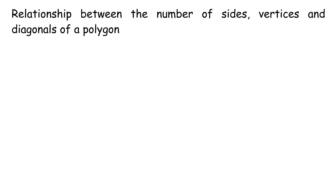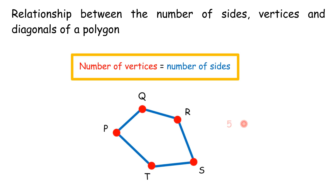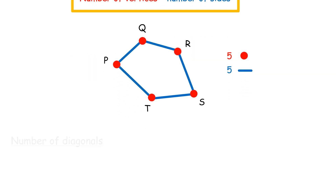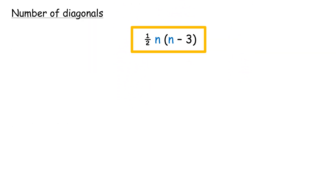Relationship between the number of sides, vertices, and diagonals of a polygon: the number of vertices equals the number of sides. The number of diagonals equals half of n times (n minus 3), where n equals the number of sides.